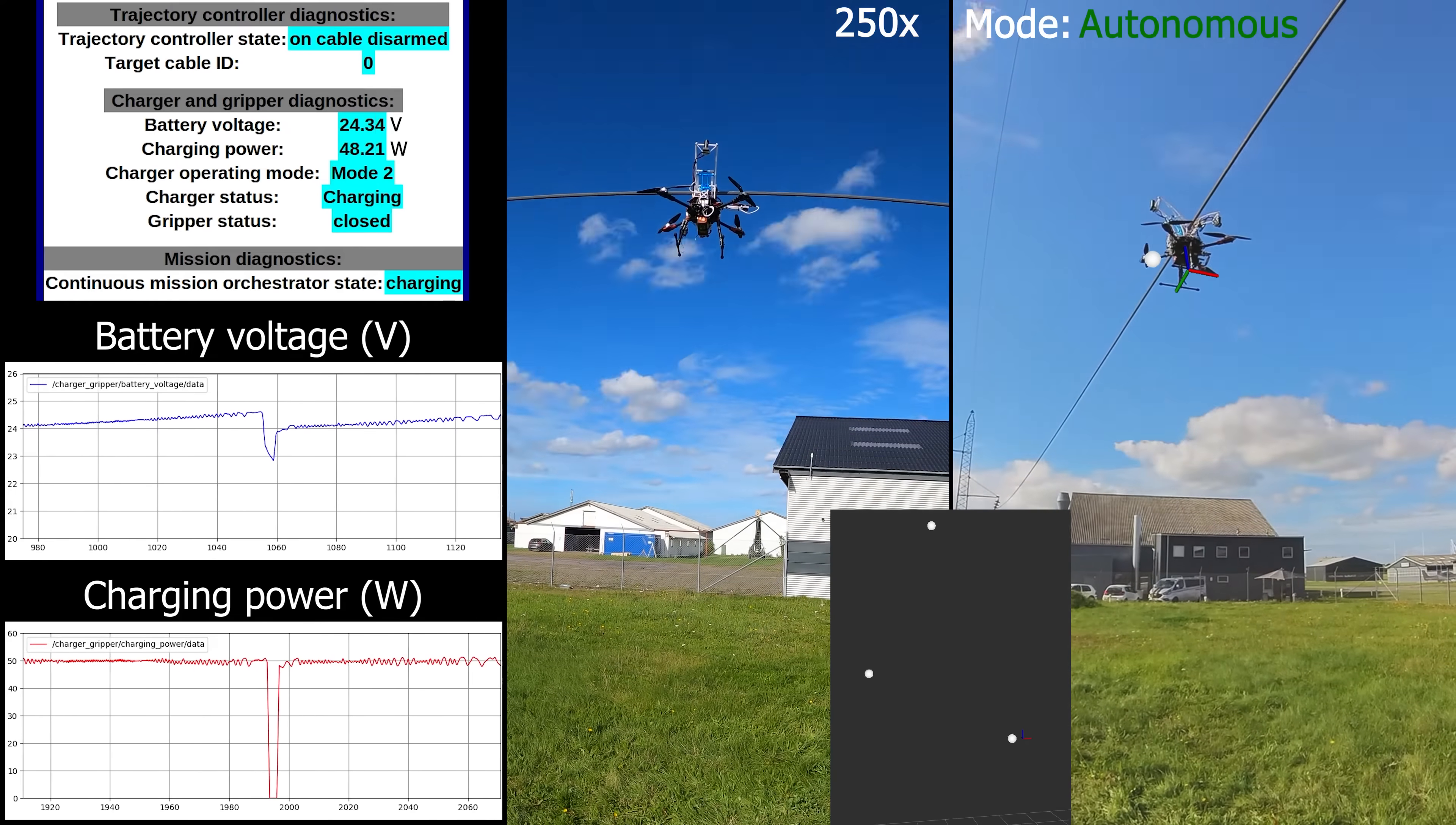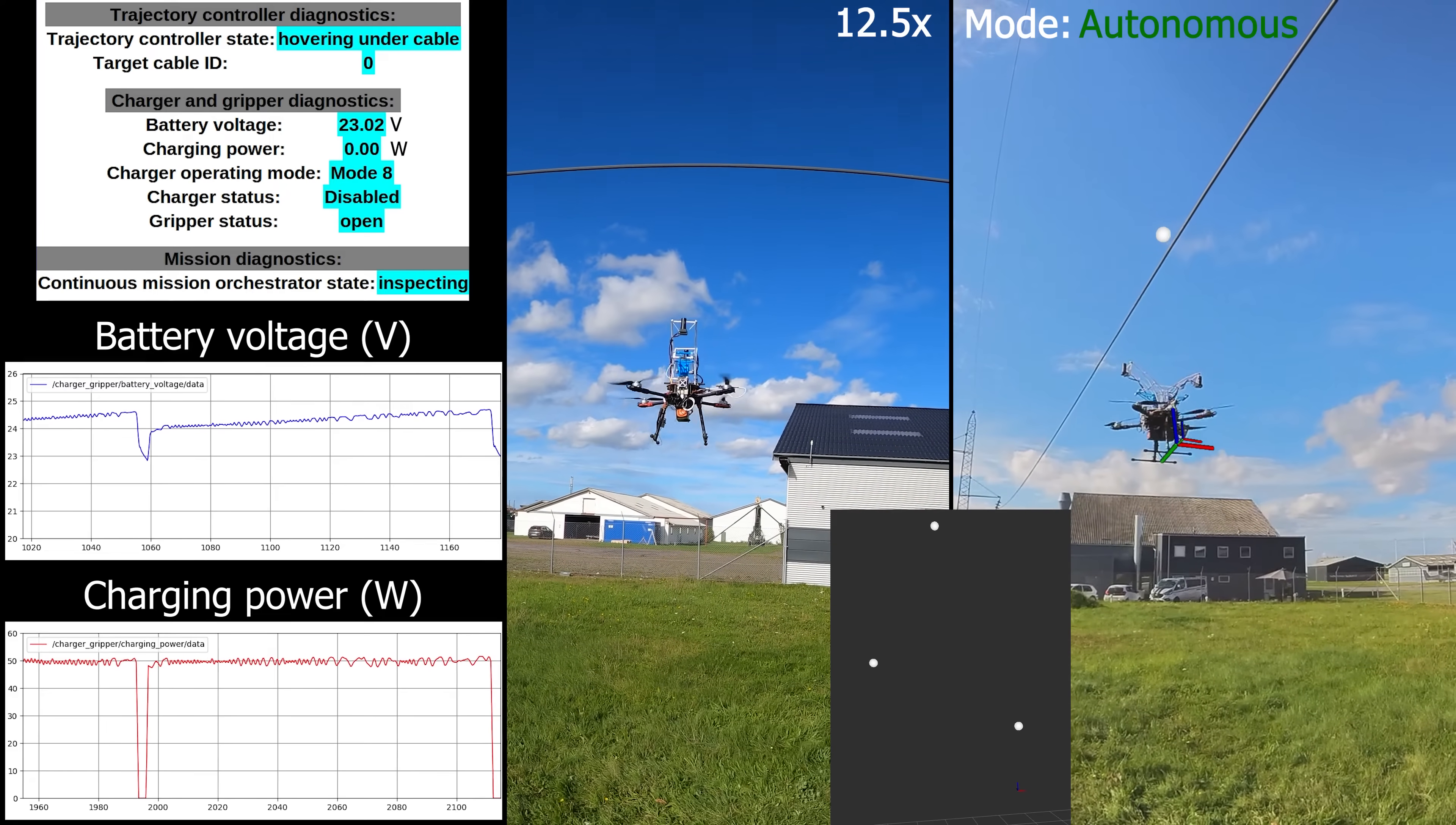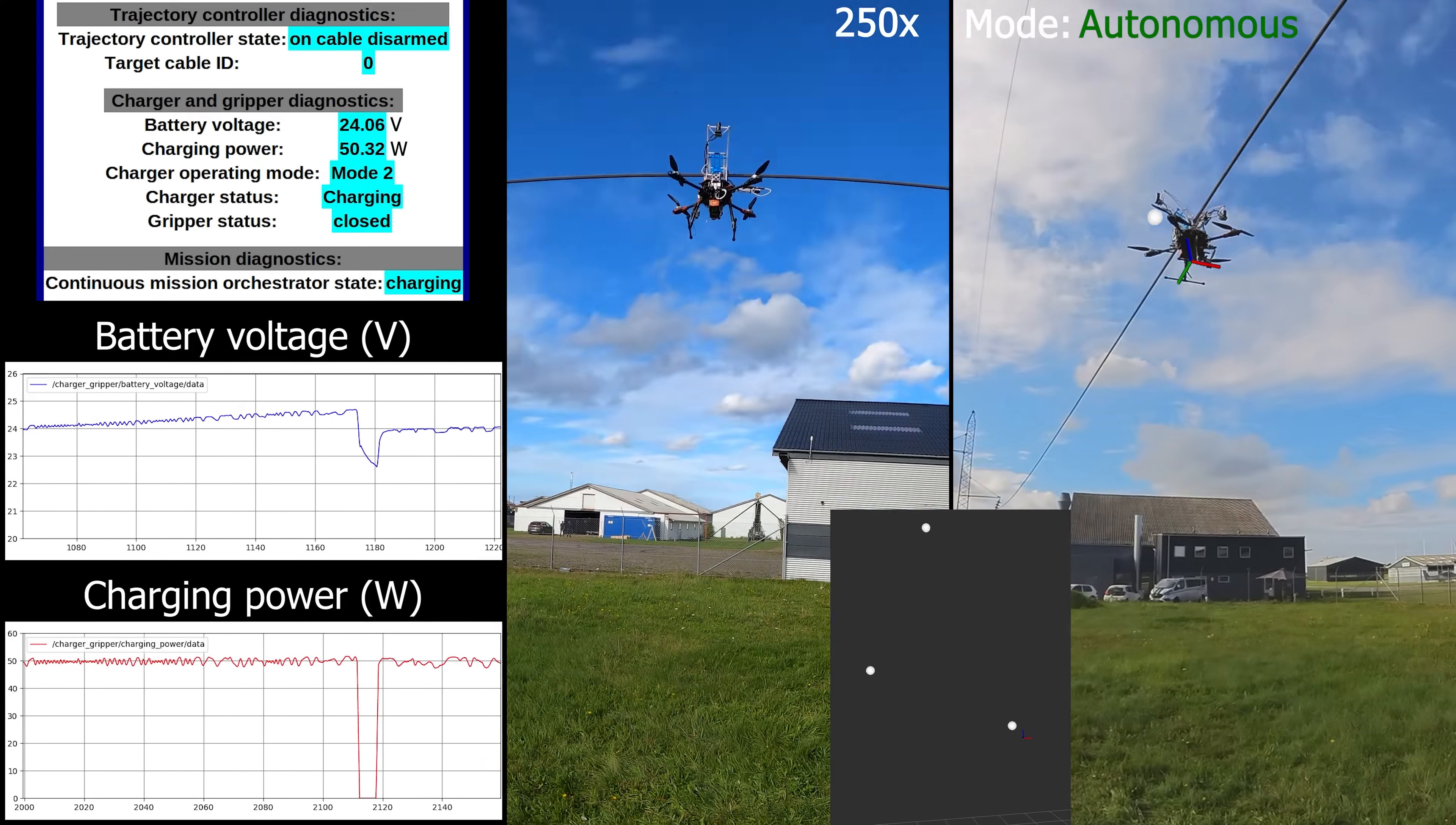The current in the power line was approximately 300 amperes from which the energy harvesting device was able to charge the battery with 50 watts. A higher power line current would result in a proportionally higher charging power.